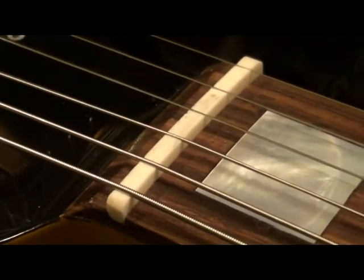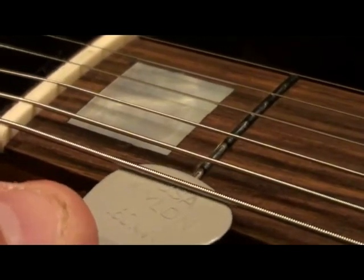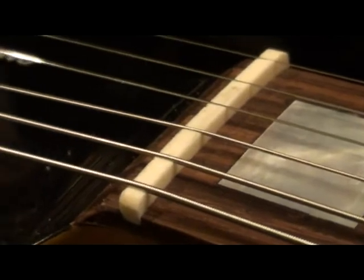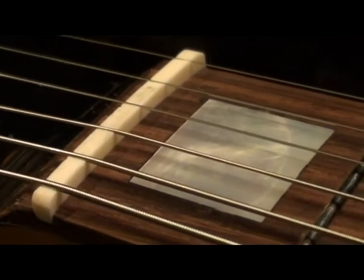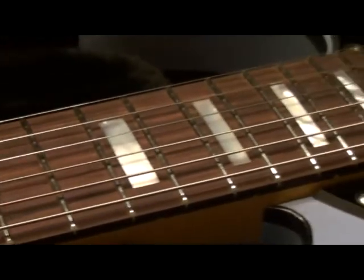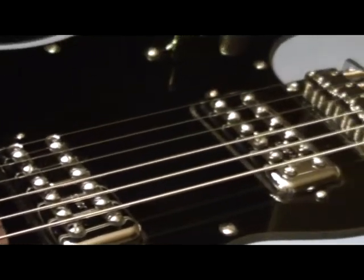As you can see, the next stage after filing the slots, I string it up and just check my height. We're way up of course here. I got a 60 thou Dunlop pick and we got a good bit of room there. What I'm going to probably do is take material out of the bottom, easier that way, of the nut. Then I'll tweak it and work my way down to an acceptable height before I go too far, and then I'll just use the files to finalize my depths here. Yes, I did plug it in and yes it sounds incredible.